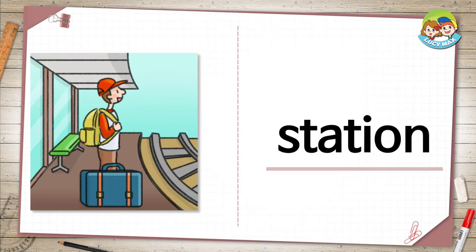The next word is station. In the picture, a man is at a train station. It's a place to get on a train or bus. What is the closest station to your house? A subway station? A train station?